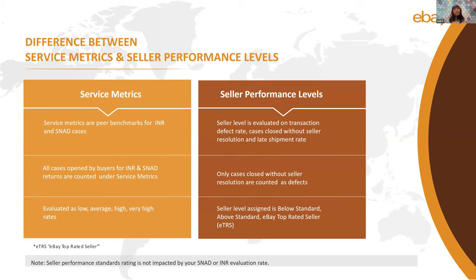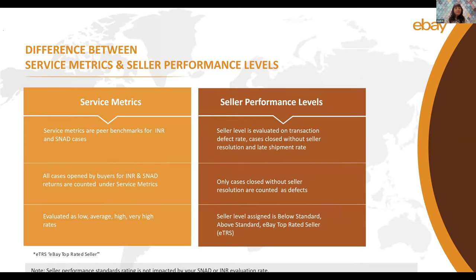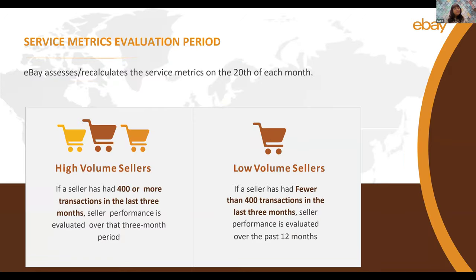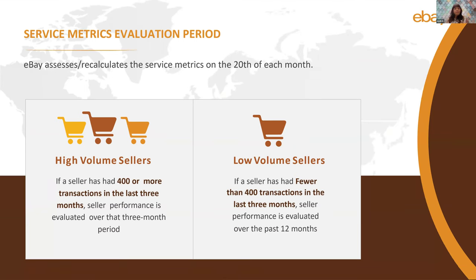Under service metrics, you are evaluated on a scale of low, average, high, and very high, whereas seller performance level assigns you a standard: below standard, above standard, or top-rated seller. Please bear in mind that seller performance standards rating is not impacted by your SNAD or INR evaluation rate. Similar to your seller level, service metrics are evaluated every month on the 20th. If your sales volume has been 400 or more transactions, we take the last three months for evaluating your service metrics; if fewer than 400 transactions, the look-back period is the last 12 months.